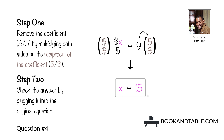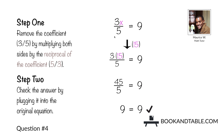Check this answer by plugging it back into the original equation, 3/5 x is equal to 9. Replace x with 15 — that leaves us with 45 in the numerator. 45 divided by 5 is equal to 9, so we see that we found the correct value for x, which is 15.